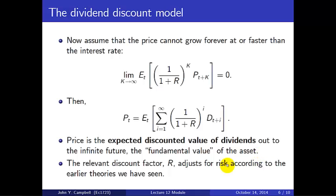I haven't told you where the number R comes from — this is the discount rate. The discount factor is 1 over 1+R, where R is the discount rate. This discount rate adjusts for risk; we can do that according to the earlier theories we've seen — you can pick your favorite model: the CAPM, the APT, the Fama-French multi-factor model, whatever you like. So that's the dividend discount model.